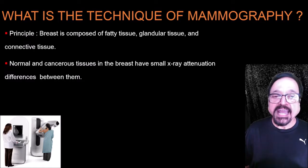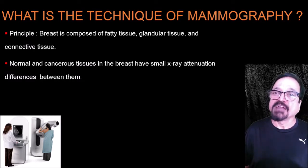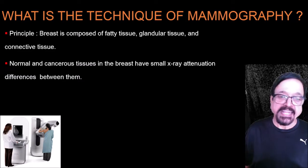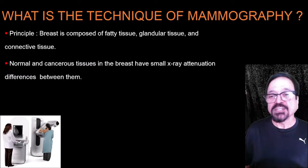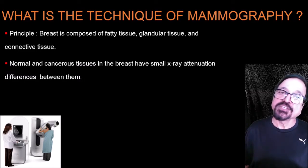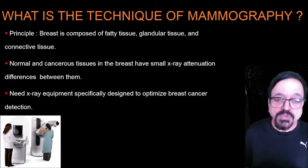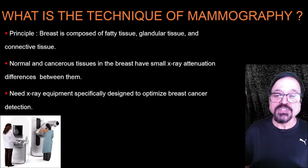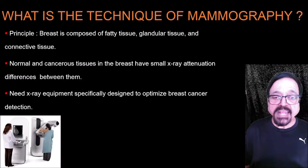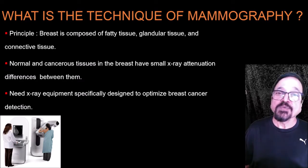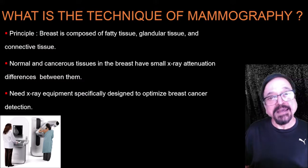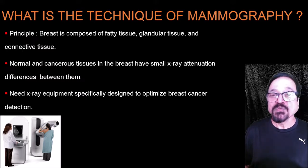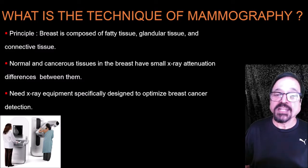The technique of mammography is based on the principle that the breast is composed of fatty tissue, glandular tissue, and connective tissue. Normal and cancerous tissues in the breast have only a small X-ray attenuation difference, so without good technique and good contrast, normal and cancerous tissues may look similar. Specialized X-ray equipment is required — a routine X-ray machine cannot be used for mammography.